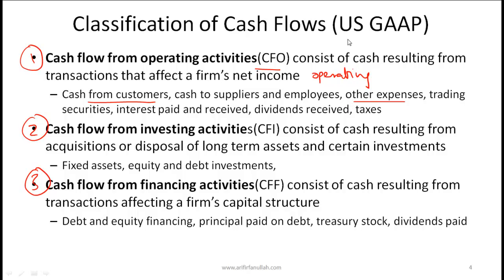Under US GAAP all these items fall in the CFO category. Cash flow from investing consists of cash resulting from acquisitions or disposal of long-term assets and certain large investments. Any money spent on fixed or long-term assets is classified as CFI, and when you sell those assets the proceeds are recorded as a cash inflow in CFI.